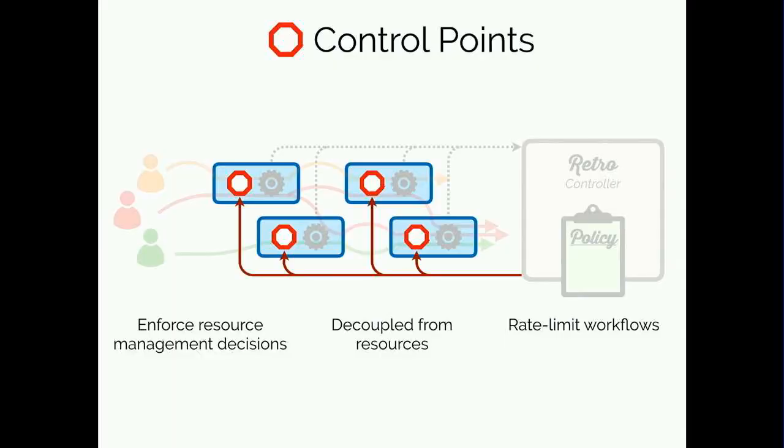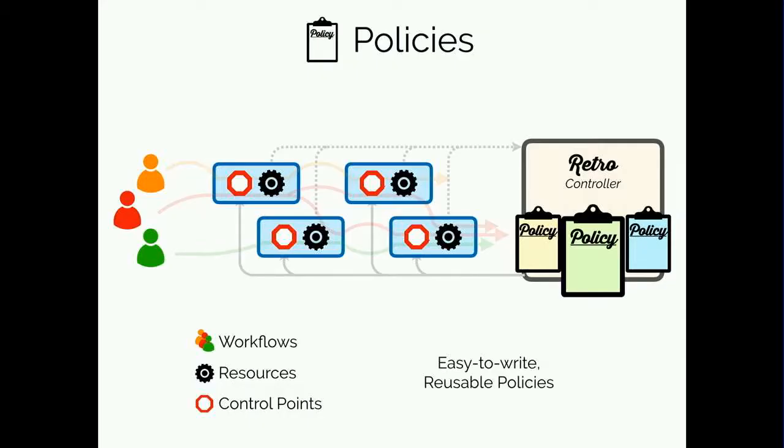Retro's third abstraction is control points, which enforce resource management decisions. Control points are decoupled from resources and their implementation can vary — it might simply be pausing a thread where it's okay to do so, or interposing on queues to delay requests. Using control points, policies can throttle individual workflows to reduce their future load on resources they consume. Using these three abstractions — workflows, resources, and control points — we can write resource management policies that run on Retro's centralized controller. These policies encode resource management logic without being tangled up in the implementation specifics of measurement or enforcement.